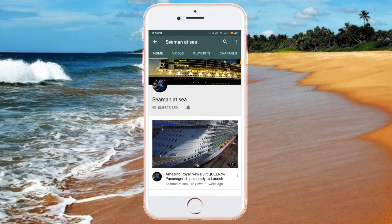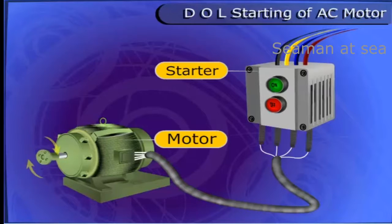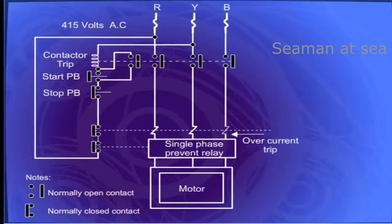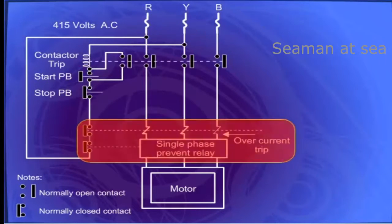Direct online starting method can be used remotely for motors having capacity less than 5 HP. The starter consists of main contacts, fuses, and thermal or electronic overload relay.